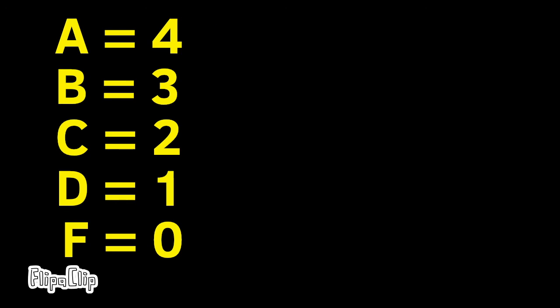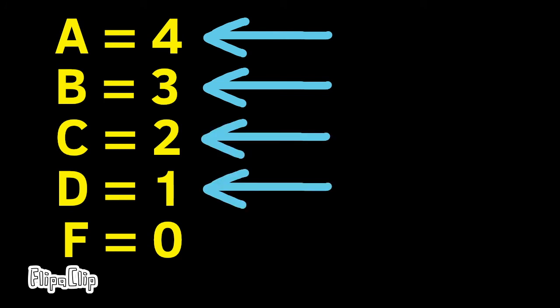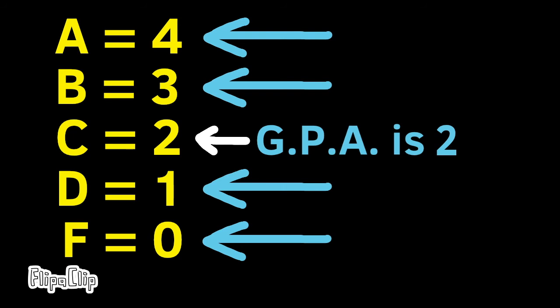For this next one, let's imagine that you're taking 5 classes, and you earn an A, a B, a C, a D, and an F. Since the 2 falls exactly between the 0 and the 4, the grade point average would be 2.0.